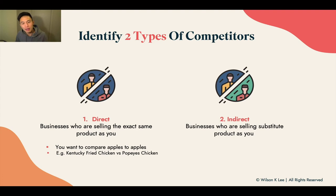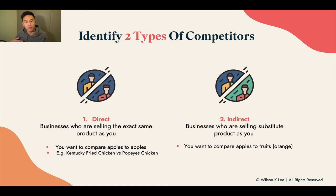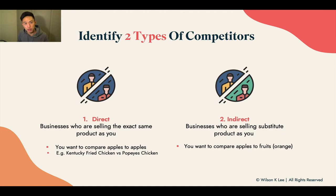Next up are the indirect competitors — businesses who are selling substitute products. So with us selling cookies, we'd compare ourselves with, let's say, David, who sells croissants. Just because the product is different doesn't mean they are not your competition, because someone buying bakery goods — perhaps a croissant — wouldn't buy cookies anymore, because they are substitutes of each other.